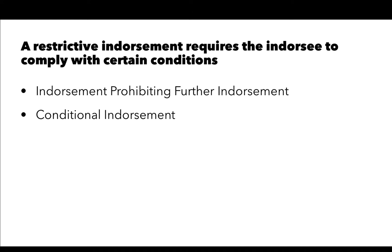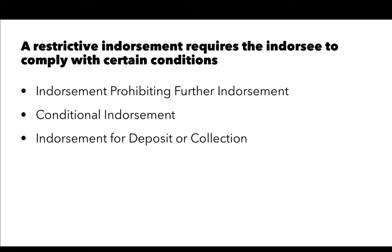A conditional endorsement makes payment of the instrument dependent on the occurrence of some event specified in the endorsement. The effect of this differs from conditional language on the face of an instrument — conditional language regarding the promise to pay destroys negotiability, but conditional language in an endorsement is treated as acceptable. For example, Todd endorses a check 'pay to Interstate Trucking if they deliver the lumber by May 1st, 2022' — this is a restrictive endorsement, but it permits negotiability to continue.